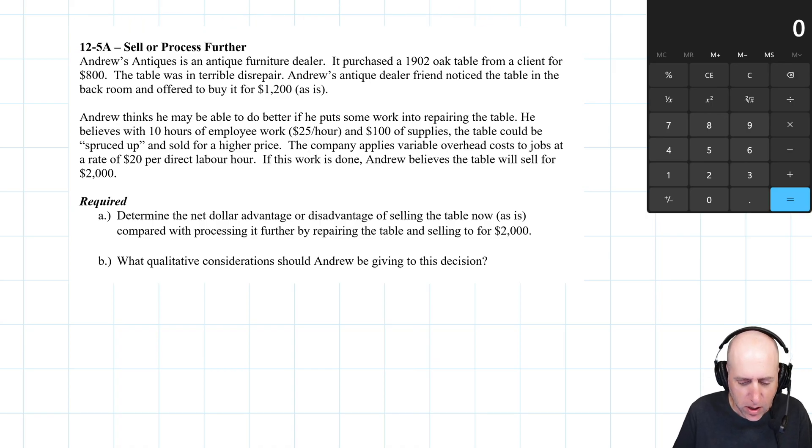It purchased a 1902 oak table from a client for $800. The table was in terrible disrepair. Andrew's antique dealer friend noticed the table in the back room and offered to buy it for $1,200 as is. So we could sell something junky right now or we can put some work into it ourselves. That's the sell or process further decision.